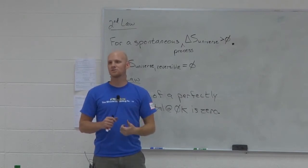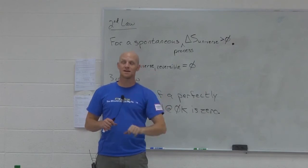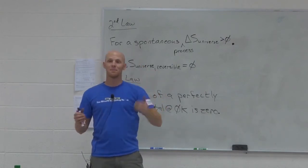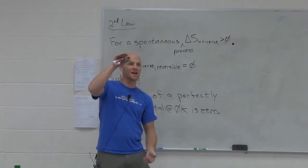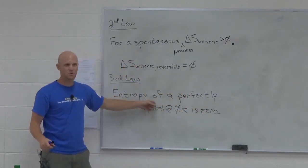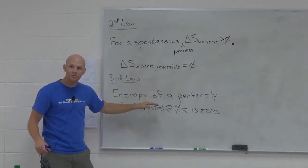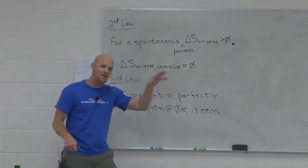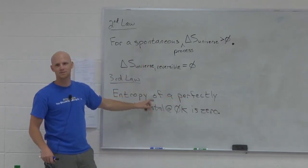We can only calculate enthalpy changes, not actually the H values. I can calculate delta H for a process, but how much H do the reactants have and how much H do the products have? We never know. But for entropy, different story. I can actually know how much S the reactants have and how much S the products have because of this third law.